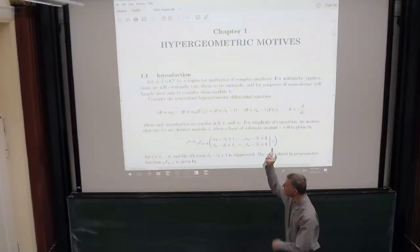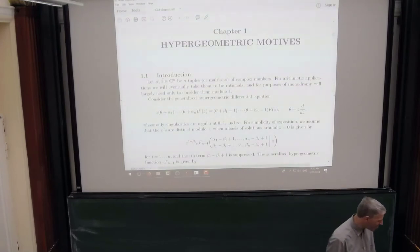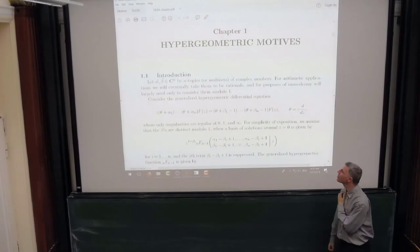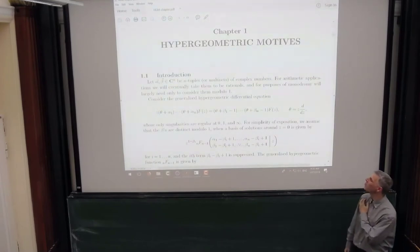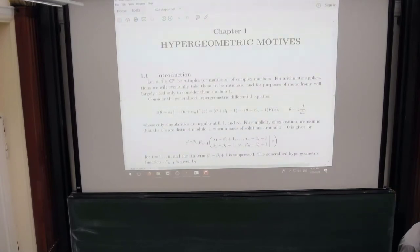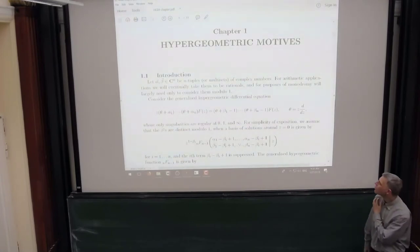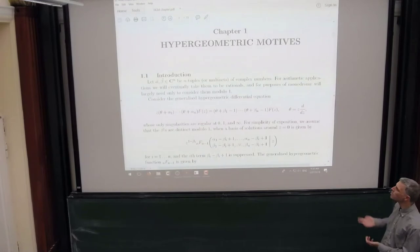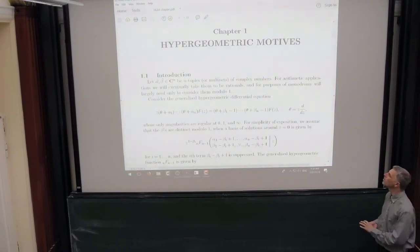This is a PDF of the MAGMA Handbook Chapter on Hypergeometric Motives. The actual chapter number is currently something like 133, but it's been recompiled to show up as chapter one. I'll go through various things in this handbook chapter, which is about 30 pages long, giving some examples, but first I want to motivate and introduce what hypergeometric motives are.